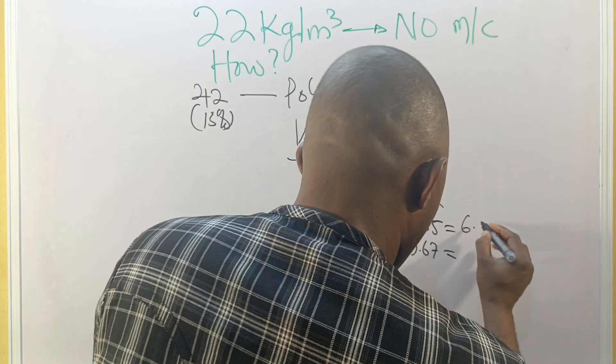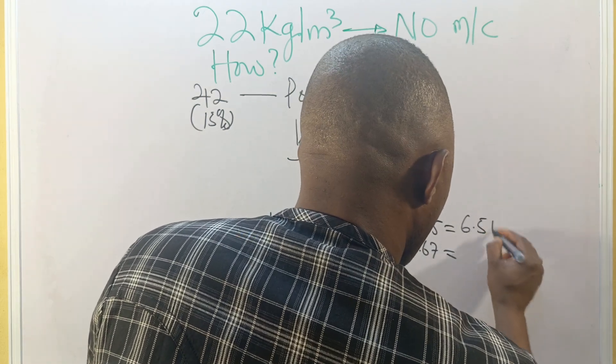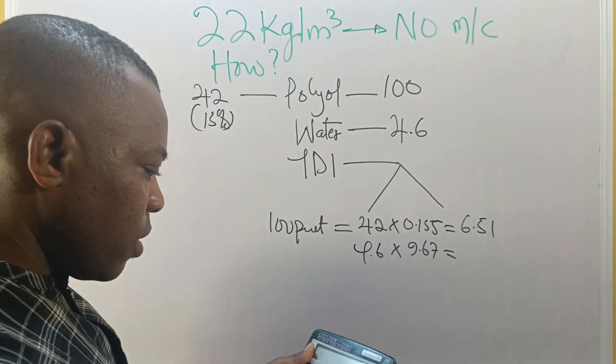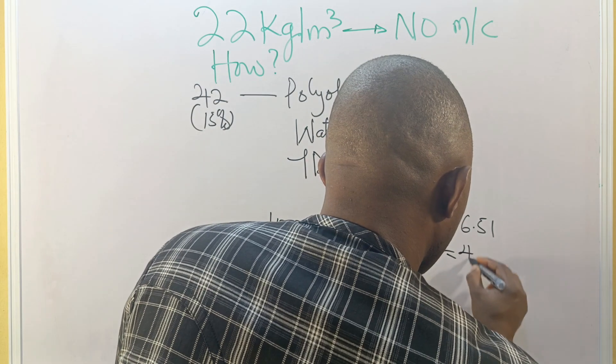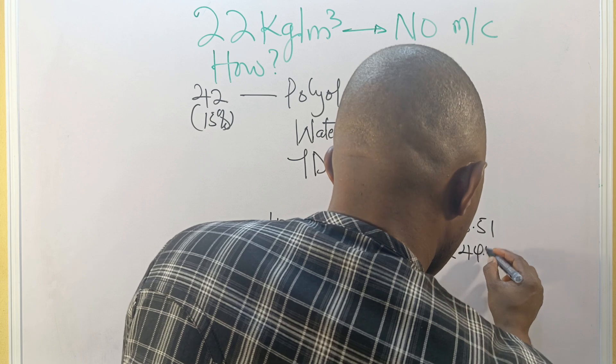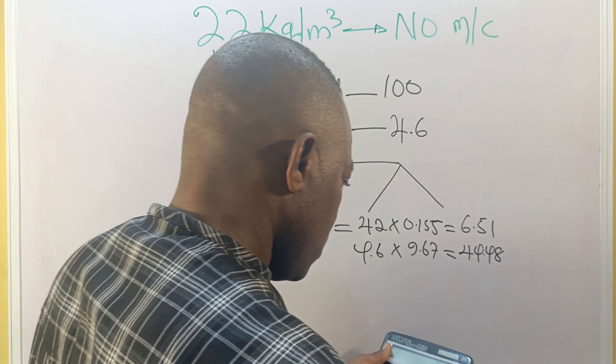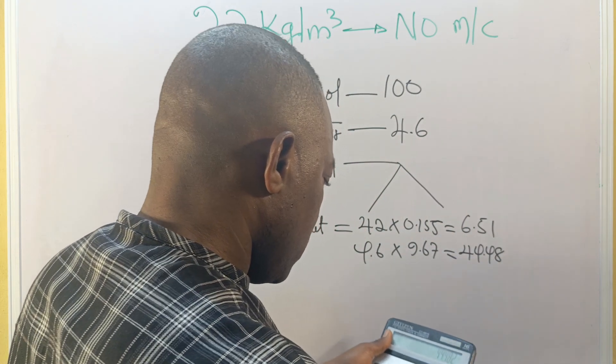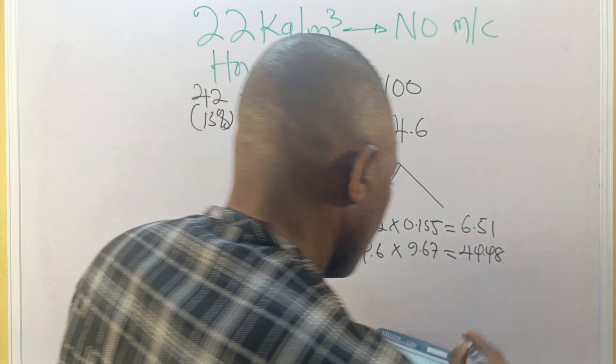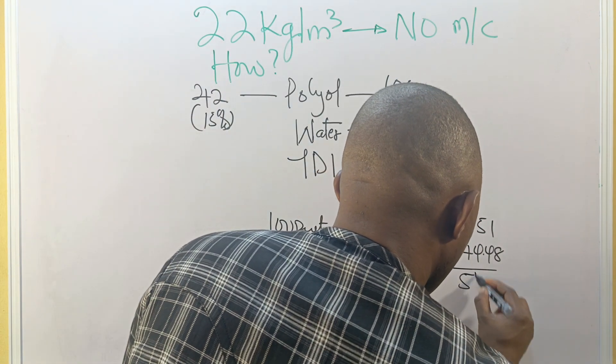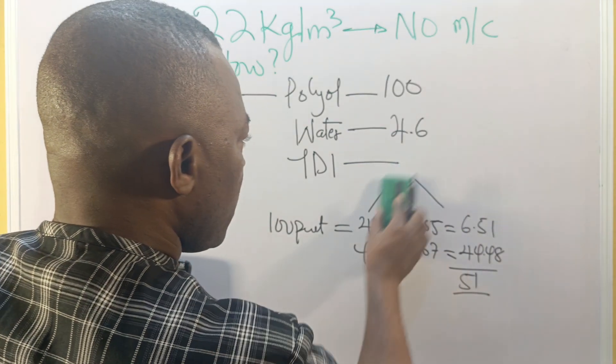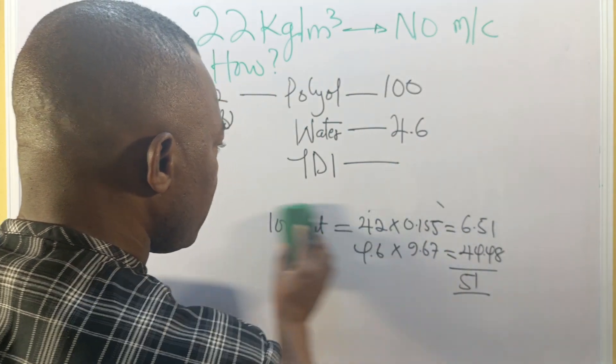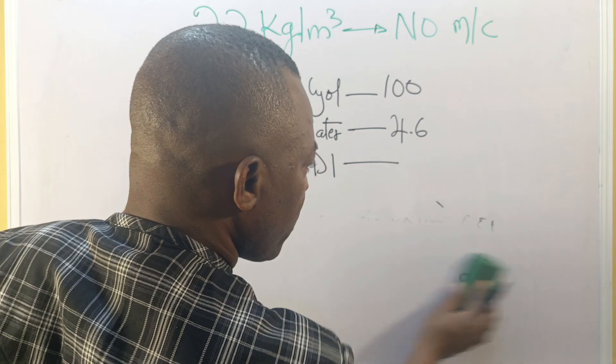That gives me 6.51. And 4.6 times 9.67, this gives me 44.48. Plus 6.51, this gives me 51 approximately. So in this case, our TDI here is 51.